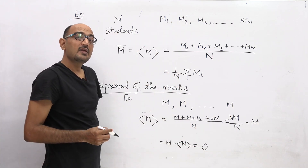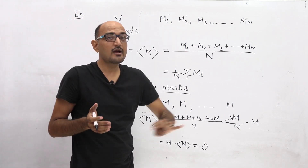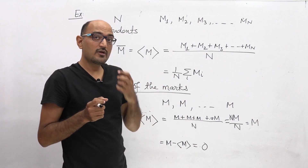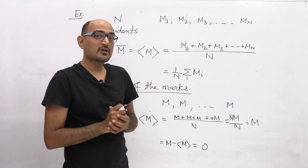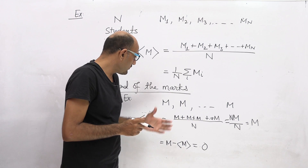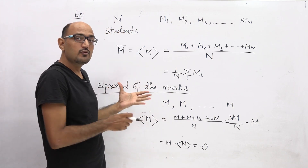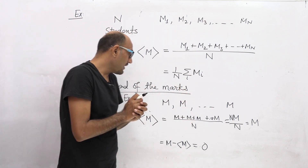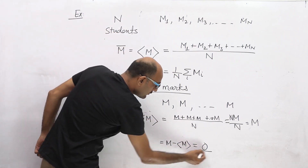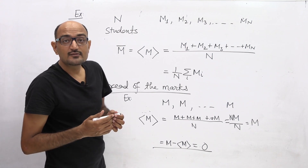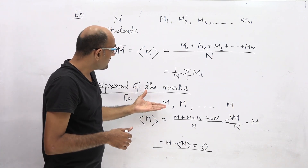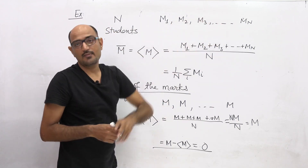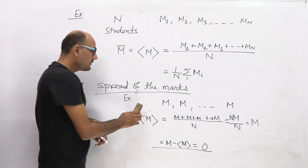This means that if all N students obtain the same marks in the quantum mechanics paper — say all students score 90 out of 100 — then there is no spread at all. Every student's marks equal the class average, so the spread is zero. But normally this does not happen, so we change this example: each student obtains different marks M1, M2, M3, MN. Now what will be the spread? Let us discuss that.